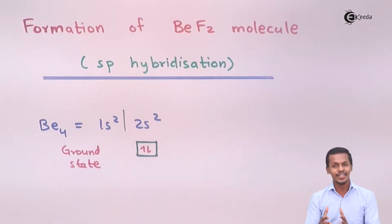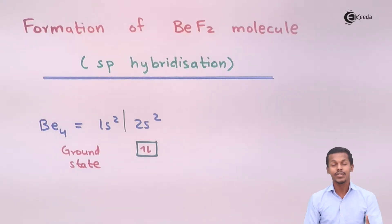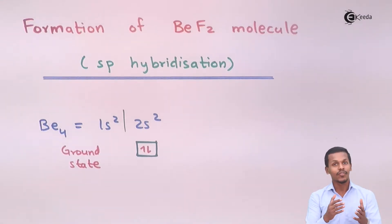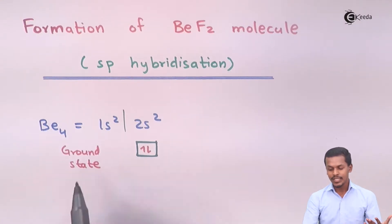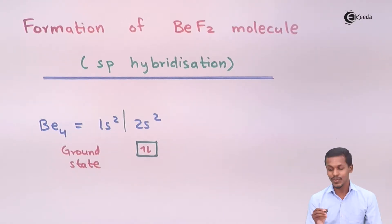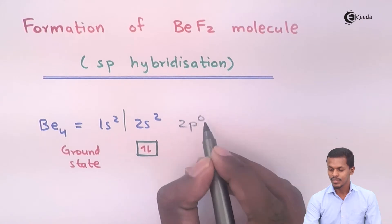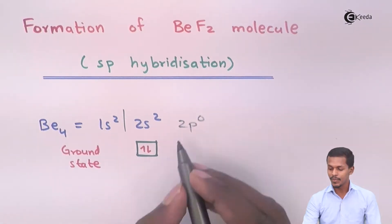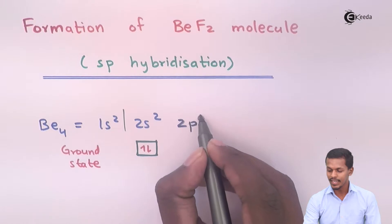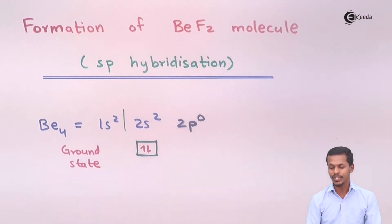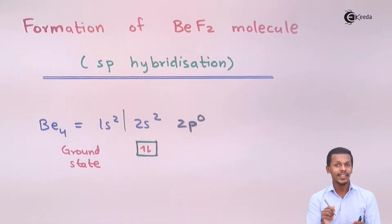So we have to excite it. The excitation of electrons will cause electrons to move toward higher orbitals which have more energy than the previous ones. The electronic configuration 1s2 2s2 can also be written as 1s2 2s2 2p0, since in the ground state the 2p orbital has no electrons.